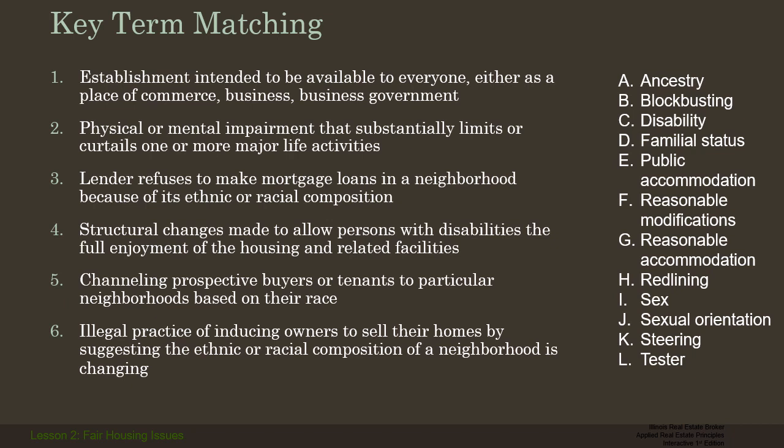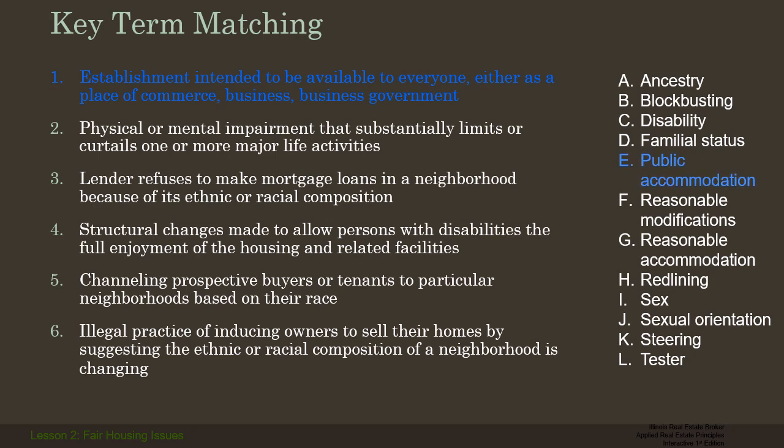Okay, let's begin our matching exercise. Follow along with your textbook and fill in the blank as I lead you through lesson two on fair housing issues. Number one: what is an establishment intended to be available to everyone — either as a place of commerce, business, or government? Particularly here we're talking about disability. That's called a public accommodation.